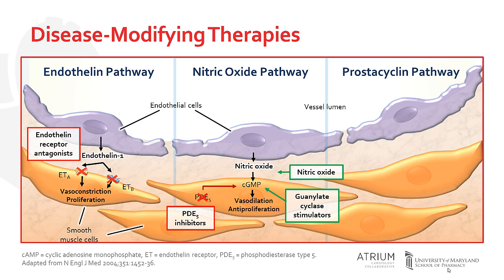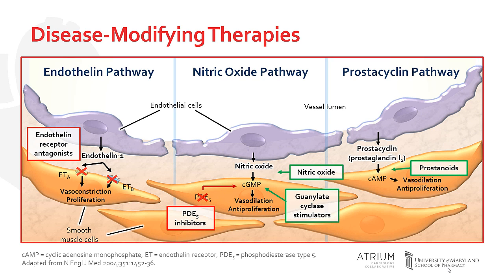Lastly, the prostacyclin pathway involves the production of prostacyclin, another endogenous vasodilator and antiproliferative that exerts its activity via enhanced cyclic AMP concentrations. Prostinoids, such as epoprostenol or treprostinil, may be used to augment this pathway in patients with PAH.